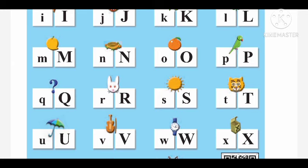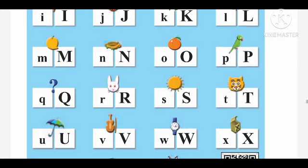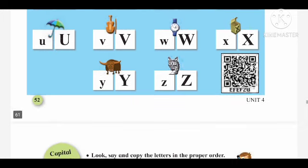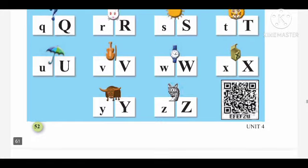O for orange. P for parrot. Q for cushion. R for rabbit. S for sun. T for tiger. U for umbrella. V for violet. W for watch. X for x-ray. Y for yak. And Z for zebra.